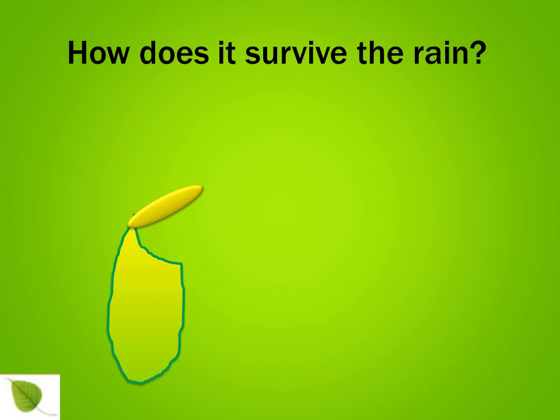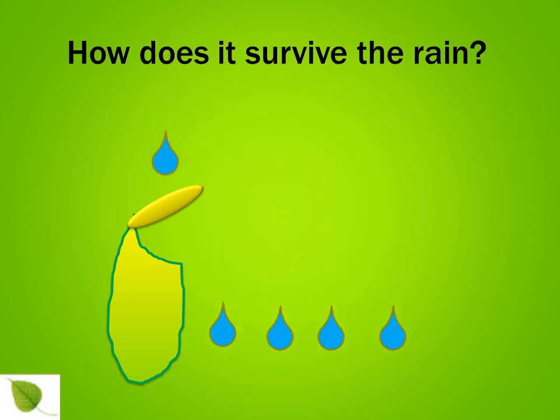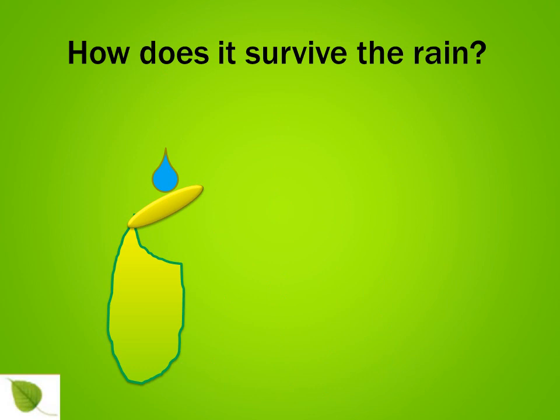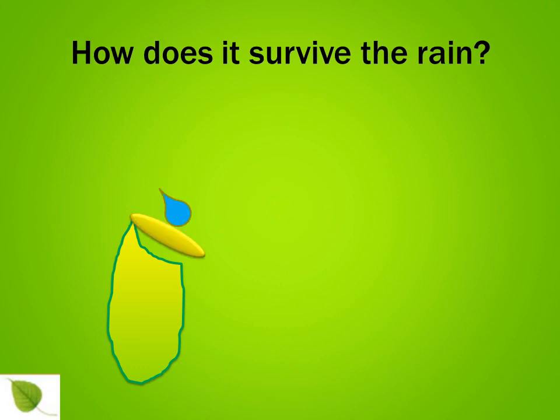Let's start pouring rain onto our pitcher plant. As you can see, the lid is getting folded and closing over the main pitcher, causing the raindrops to slip and fall. That's how the pitcher plant survives the rain.